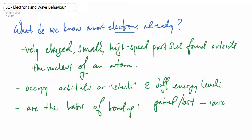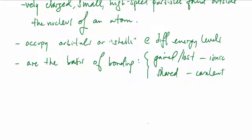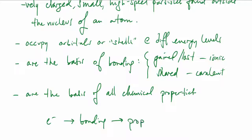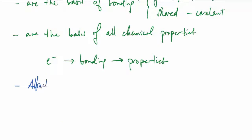We know that electrons and their sharing or their gain or loss are the basis of bonding. If electrons are gained and lost we call that ionic bonding, and if they're being shared we call that covalent bonding. Electrons are the basis of all chemical properties because chemical properties come from bonding behavior.